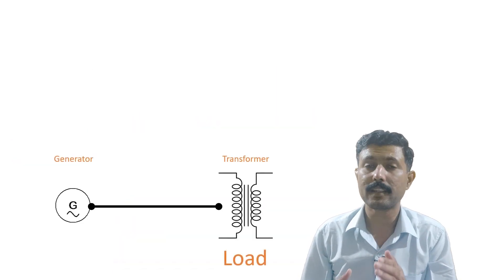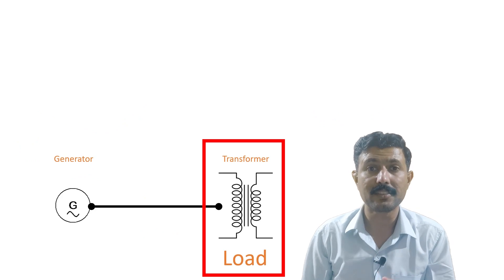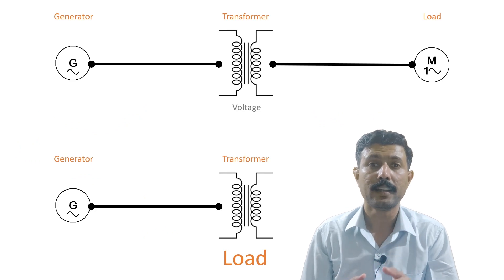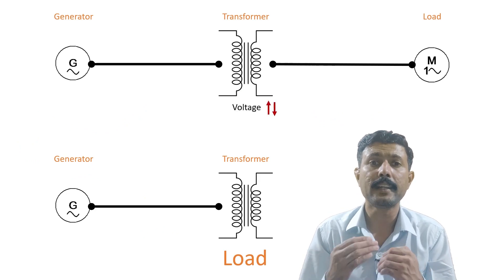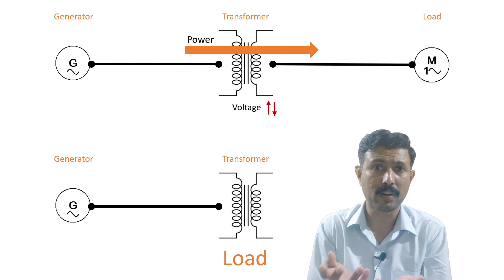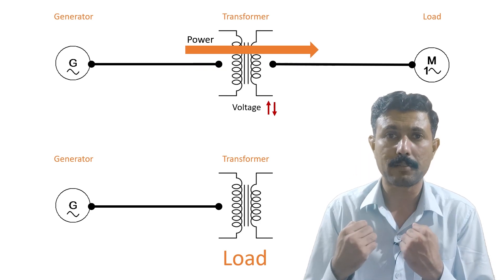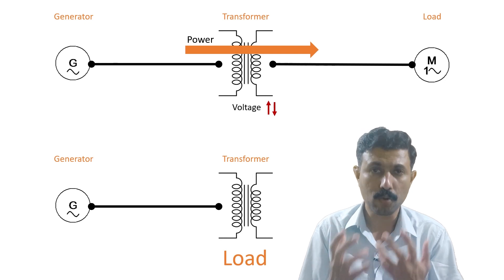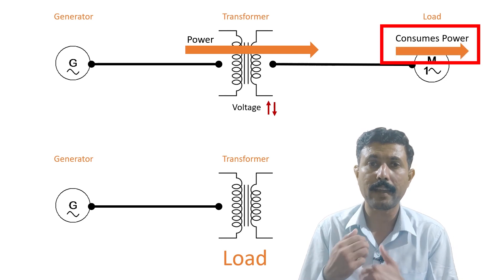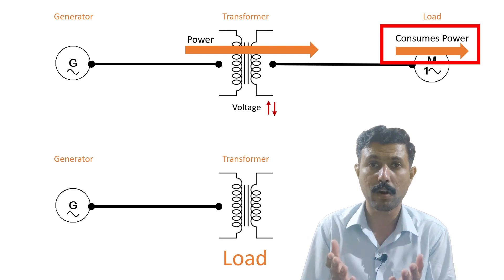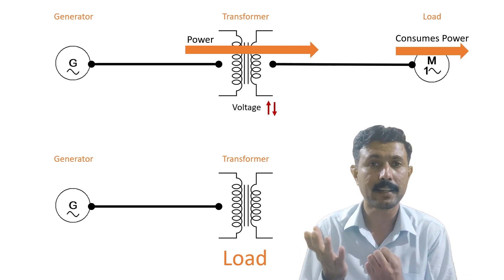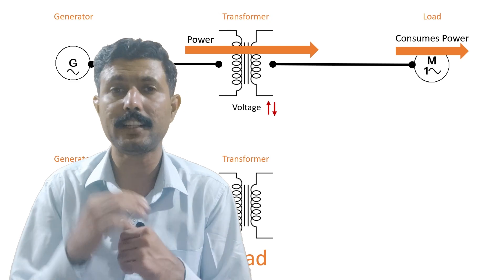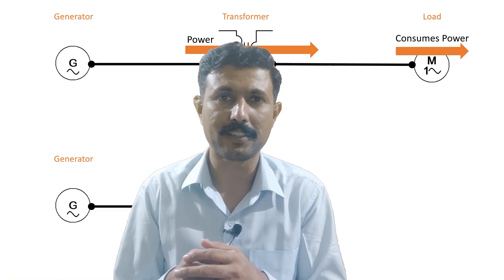In this example we are considering the transformer as a load, which is why we consider its losses. But actually, the transformer is not used as a load — it just transforms the voltage level and delivers power to the next stage. It is not consuming power; it takes power from one stage and delivers it to the next. So if it is not consuming any power, how do we define its power rating?